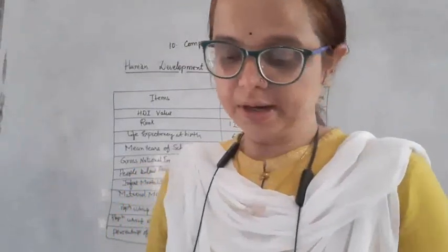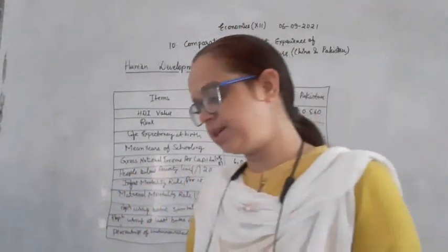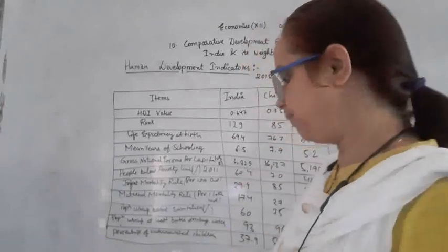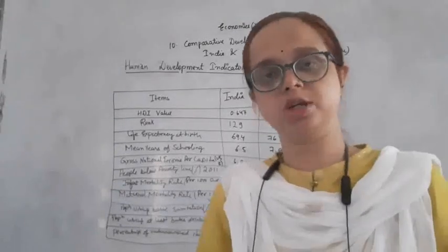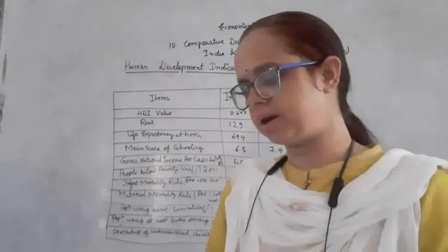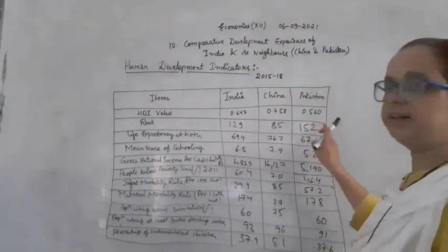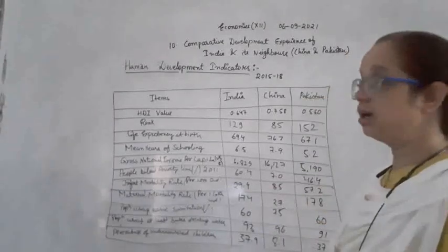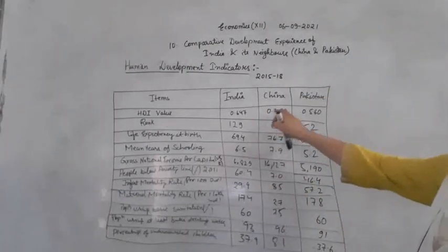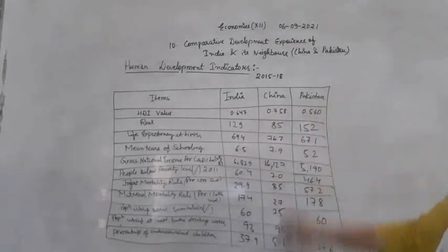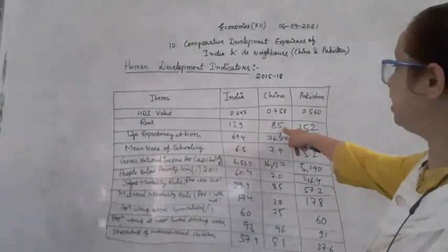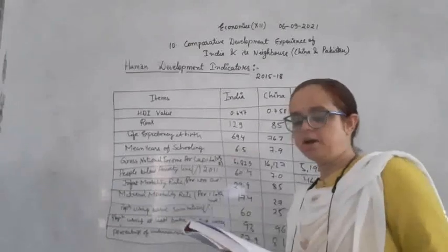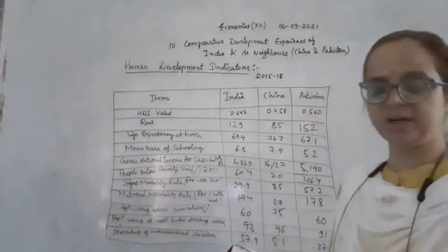As per the Human Development Report 2018, HDI for India, China, and Pakistan were 0.647, 0.758, and 0.560 respectively. Accordingly these countries were ranked 129, 85, and 152. There are various indicators to compare India, China, and Pakistan.